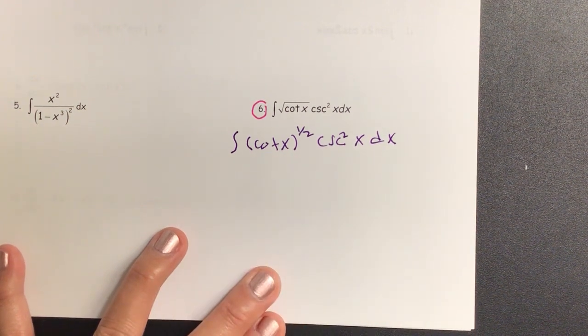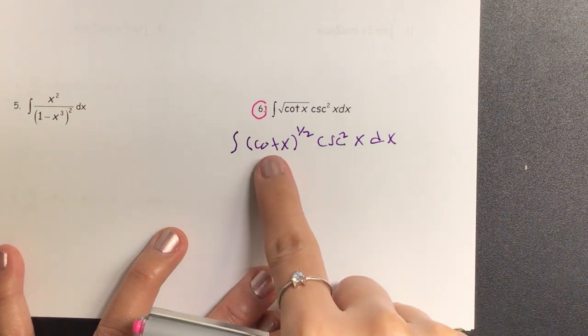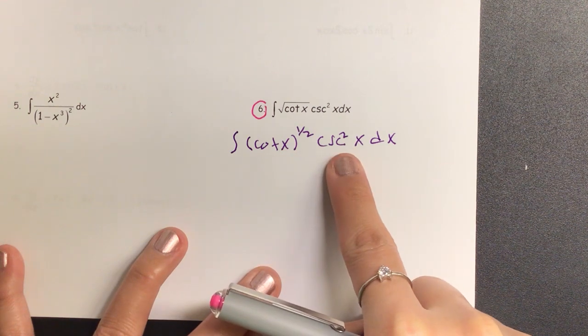What do we remember from the derivatives? Cosecant squared is negative cotangent. What about cotangent is cosecant squared?